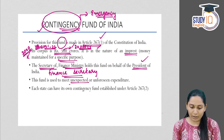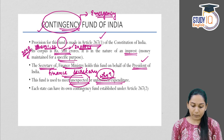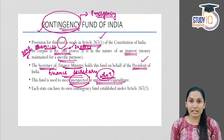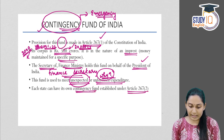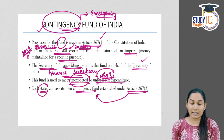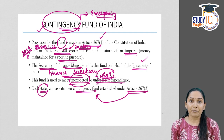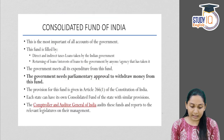The fund is used to meet unexpected or unforeseen expenditure. Each state can also have its own Contingency Fund, established under Article 267-2 of the Constitution. So state governments can maintain their own contingency funds according to constitutional provisions.